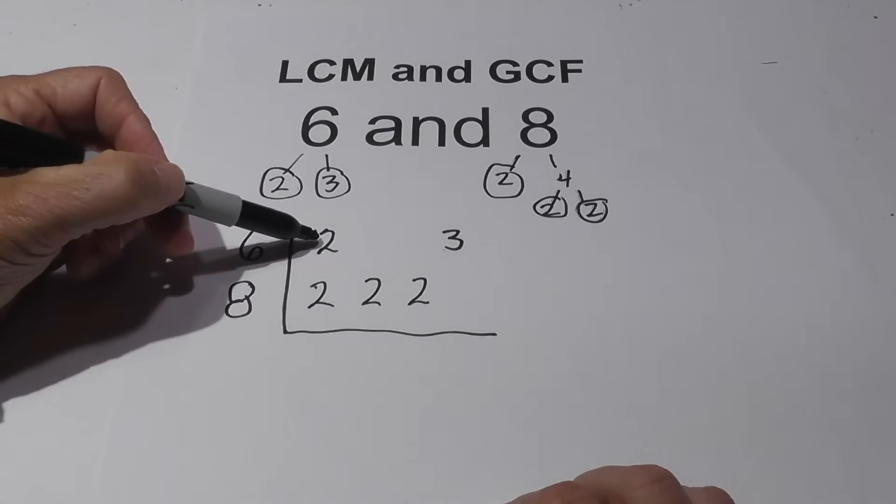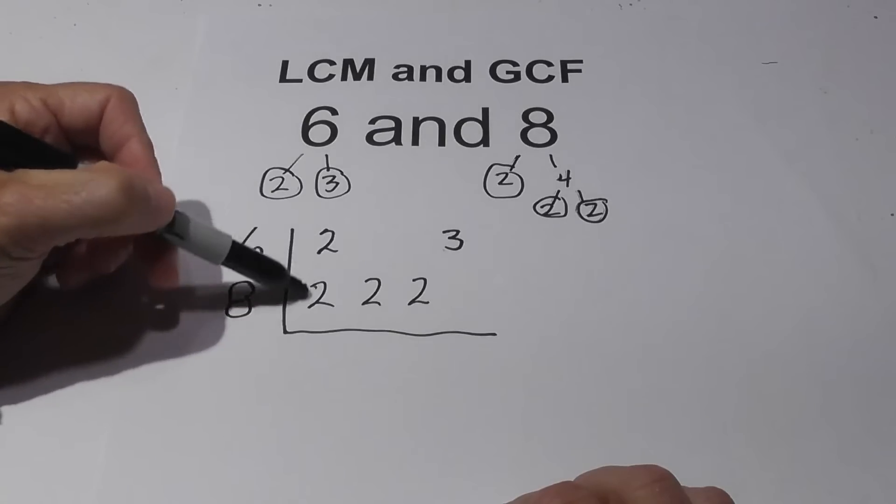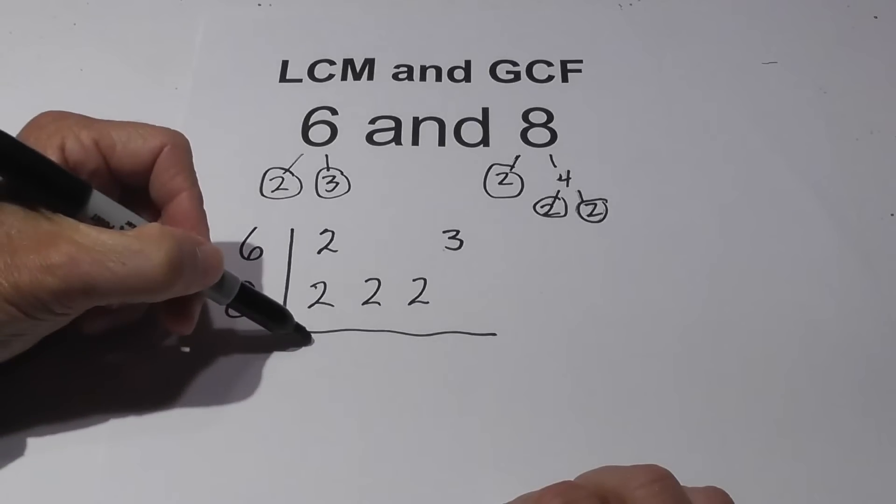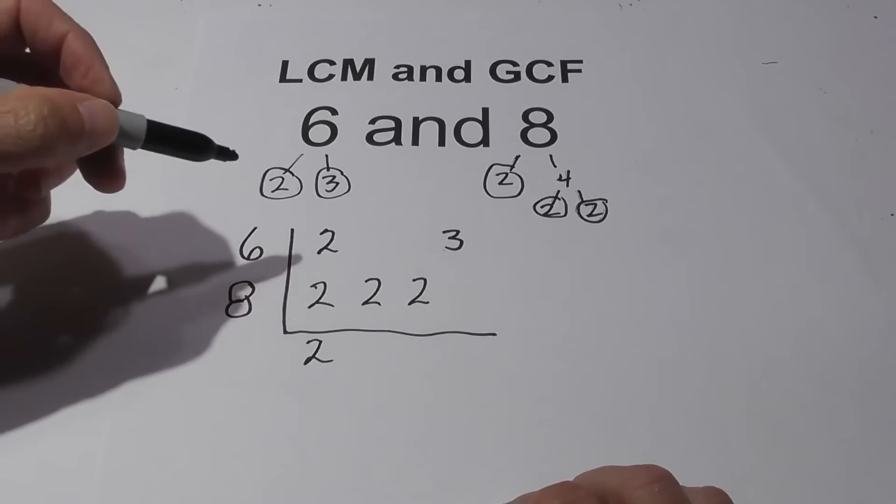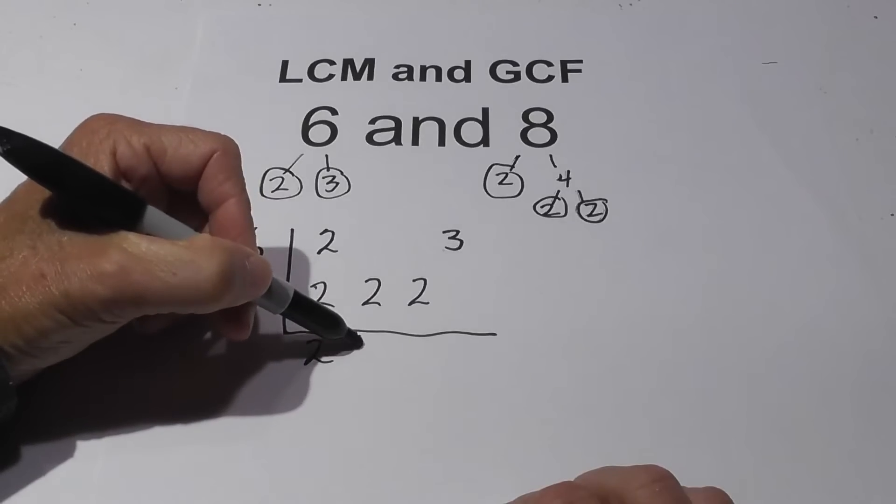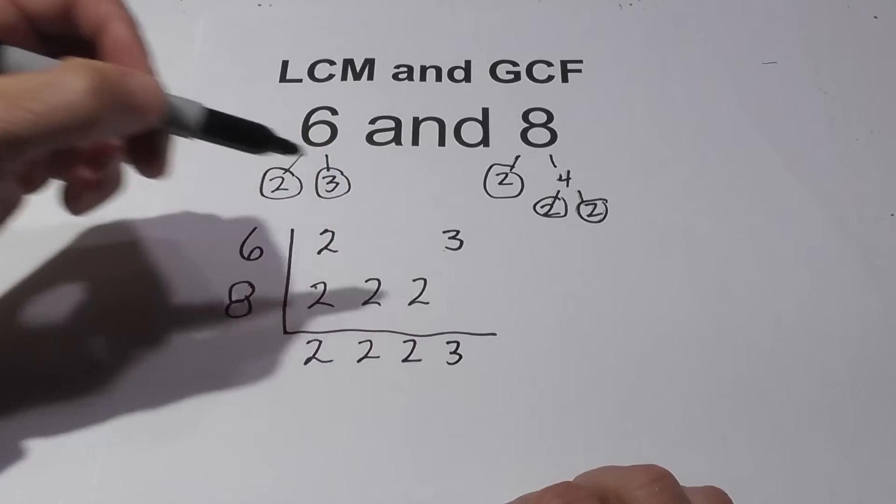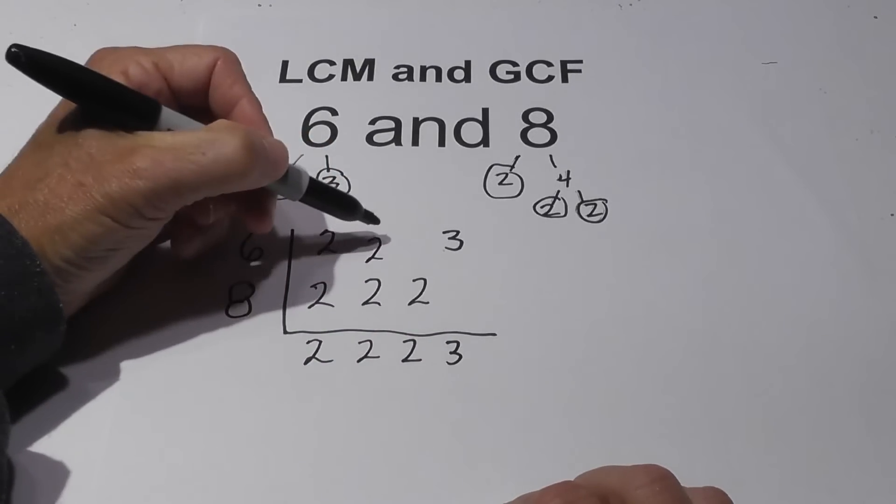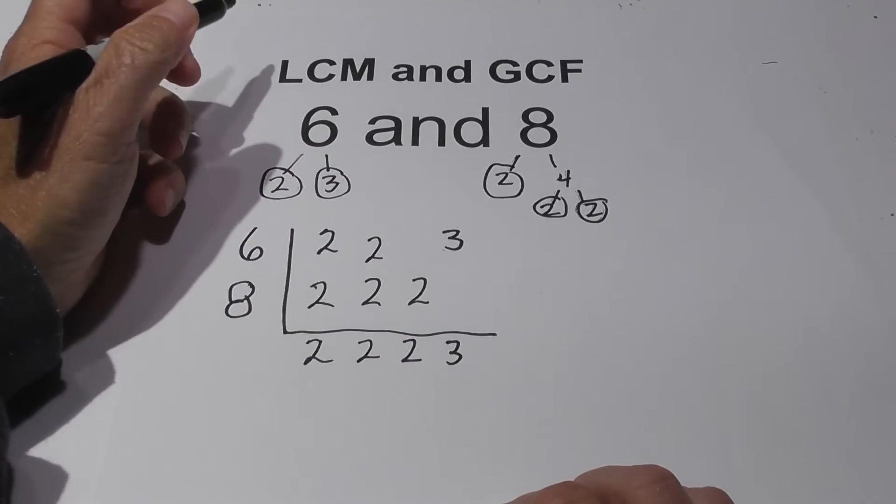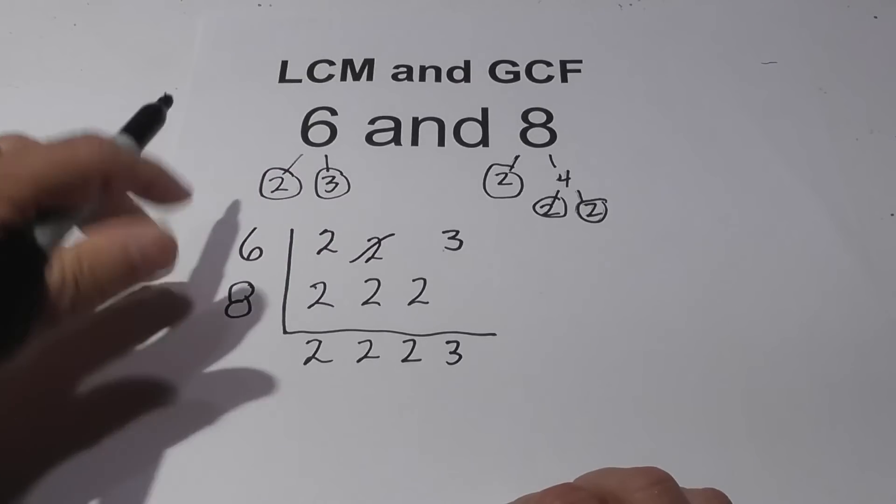If a number is found in both of these, like the 2, then I only bring down one number. I have a 2 here and a 2 here and a 3. Now, for instance, if I had the 2 here, I would still only bring down one 2, but I don't, so I don't want to confuse you.